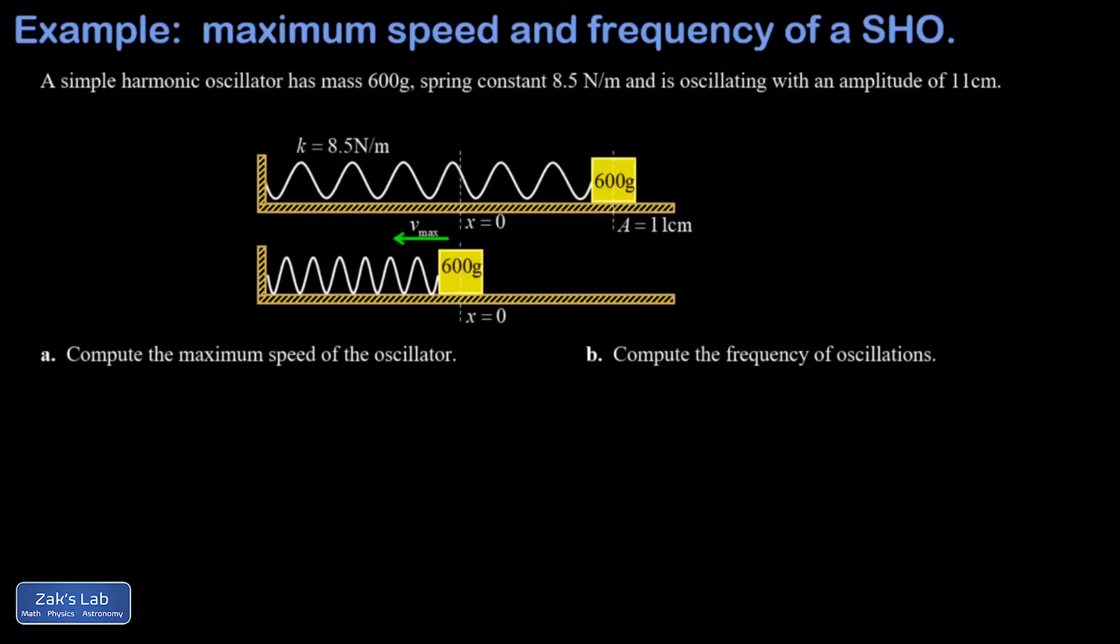In this video we're given a simple harmonic oscillator with a mass of 600 grams and a spring constant of 8.5 newtons per meter. We're told this is oscillating with an amplitude of 11 centimeters. In part a of the question we're asked to compute the maximum speed of the oscillator and this is a conservation of energy question.